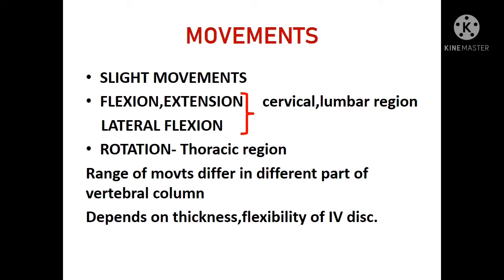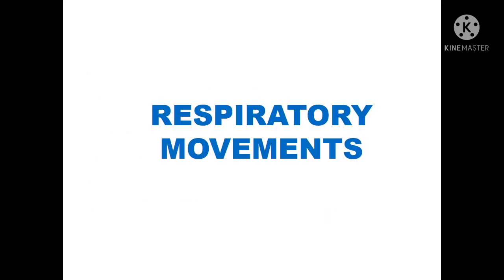The movements allowed in the vertebral column are flexion, extension, and lateral flexion in the cervical and lumbar regions. Rotation movements are more prominent in the thoracic region. The range of movements differs in different parts of the vertebral column and also depends upon the thickness and flexibility of the intervertebral disc.